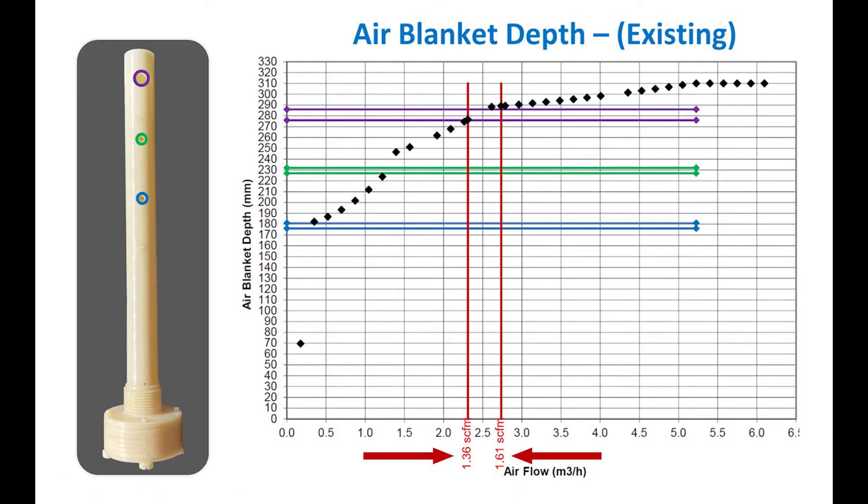At the two scour air flow rates desired by the utility, the predicted blanket depths were very near the large metering hole at the bottom of the tailpipe.